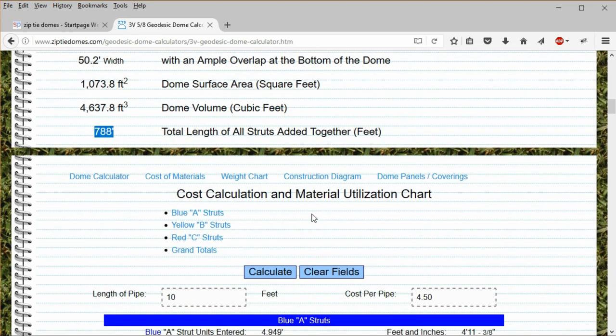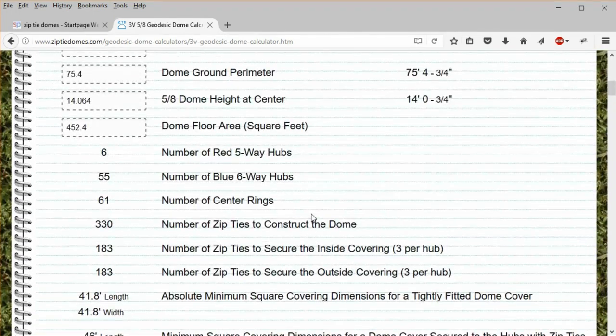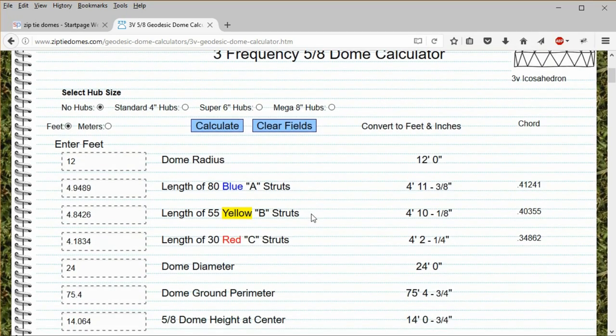Below this section is the cost calculation and material utilization chart, which we will discuss in a later video. Let's go back up to the top of the calculator and look at the hub sizes.